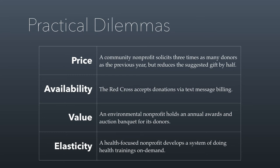And finally, elasticity — when it comes to supply, another way to think about it is substitutability, meaning how easily can you change what you do into other programs or altruistic opportunities. An example would be a health-focused nonprofit that develops a system of doing health trainings on demand, so you can do health trainings anywhere and whenever you want, rather than requiring people to come to your facility. A change like that increases the elasticity of the altruistic opportunity, and all of a sudden you might be able to do a lot more of it.